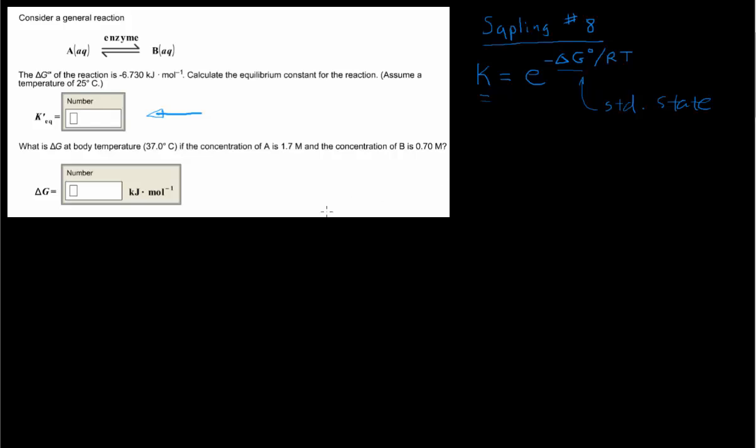So in order to answer the second part to this question, we need to remind ourselves or learn some stuff about some properties of delta G. You'll recall that when delta G is less than 0, negative, that we have a spontaneous process.